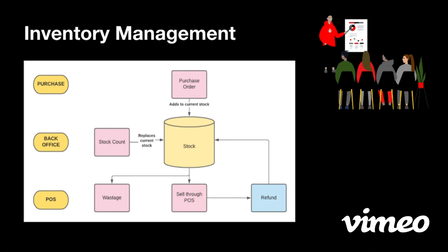As we can see in the middle, you've got your stock, your stockholding. On the left you can see Purchase, Back Office, and POS. In terms of stock decrementation, you want your sales to decrement from your stock obviously. So whenever I sell a bottle of wine, I want this bottle to be decremented from my stockholding. As we can see at the bottom, sales through the POS. If I break a bottle of wine, I want to be able to record this as wastage, so the system doesn't expect this bottle of wine to be part of the stockholding next time I do a stock take.